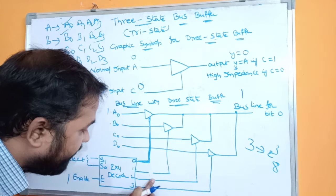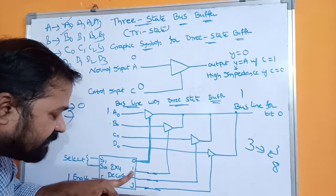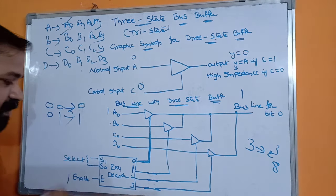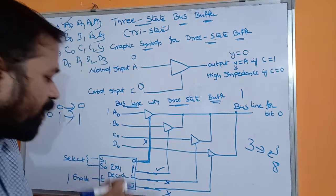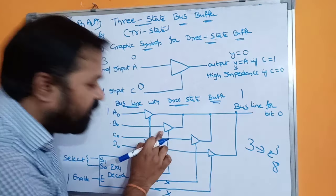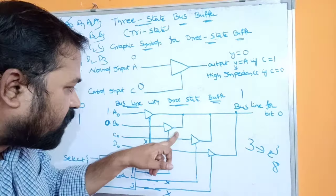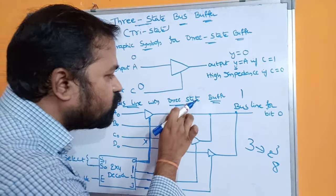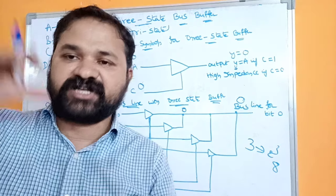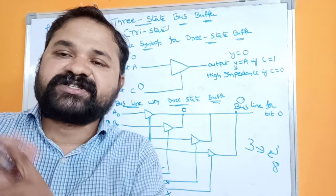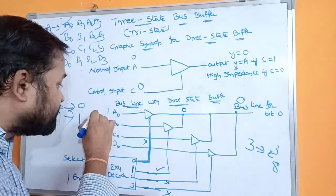If selection inputs are 0, 1, then the decoder produces output 1 as active, while the remaining three outputs are deactivated. That 1 is passed as control input to the second three-state buffer. If B0 contains the value 0, the three-state buffer outputs 0, which is placed on the bus and transferred to the destination register. This is how we transfer contents from one register to another register using a bus.